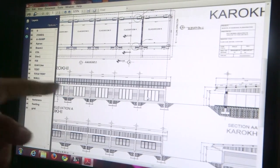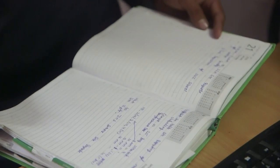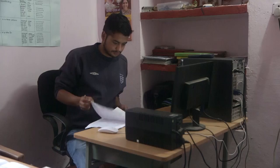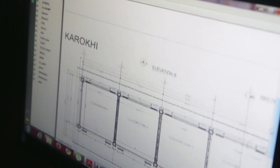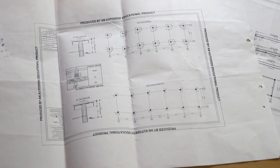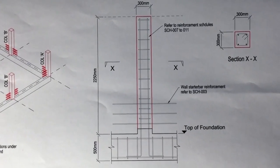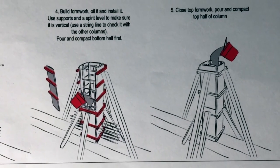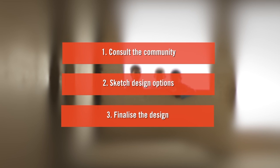Finalising the school design is a very technical step, but part of this step is also deciding who will manage the construction process and how much the community can be involved. Community involvement will often depend on the skills, experience, and interest of the community. This will guide the design team in how they communicate and draw the design. If an experienced contractor is hired, the design drawings will probably be traditional blueprints. However, if the community will be heavily involved, the design team needs to make sure everyone can understand the drawings, which may need to be pictorial. Consulting with the community, sketching design options, and finalising the design ensures the school design is safe and supported by the community.